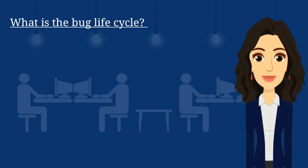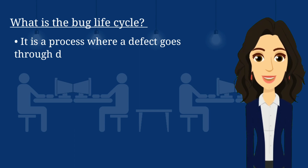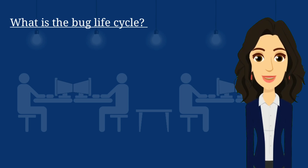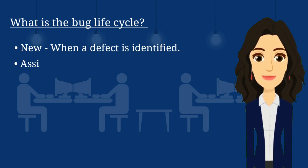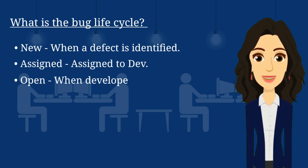The next question is: what is the bug life cycle? A bug or defect life cycle is a process where a defect goes through different stages. The stages with short descriptions are: New — when a defect is identified. Assigned — when it is assigned to a developer. Open — when the developer opens the defect.